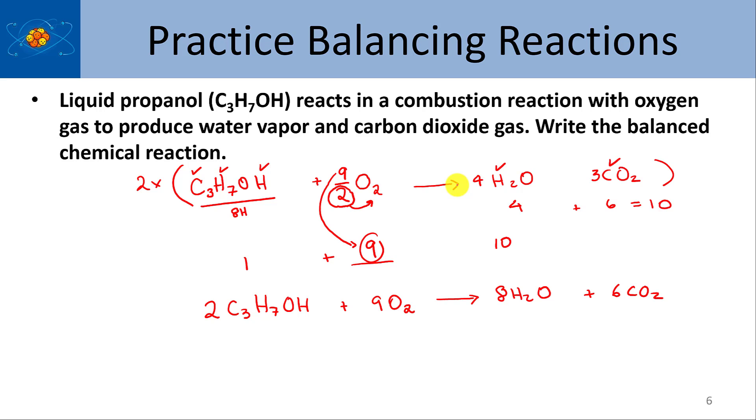All right. So that's my balanced reaction. At this point, I would probably advise students to go ahead and double check. So let's go ahead and do that. All right. I have two times three, so I have six carbons. I have two times eight, so I have 16 hydrogens. And then I have two oxygens plus 18. So that's 20 oxygens. And so that's what we need to have balanced out.